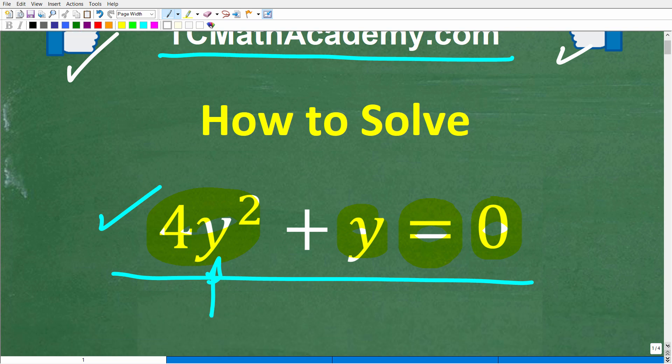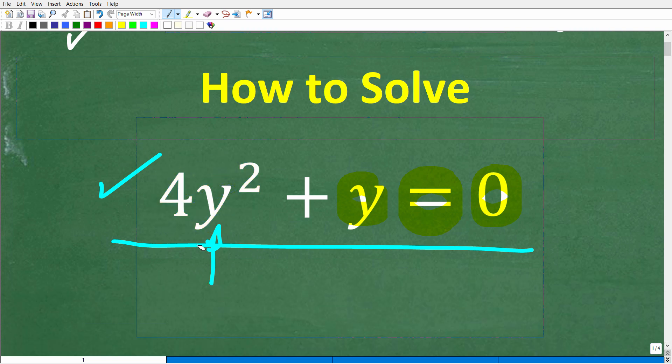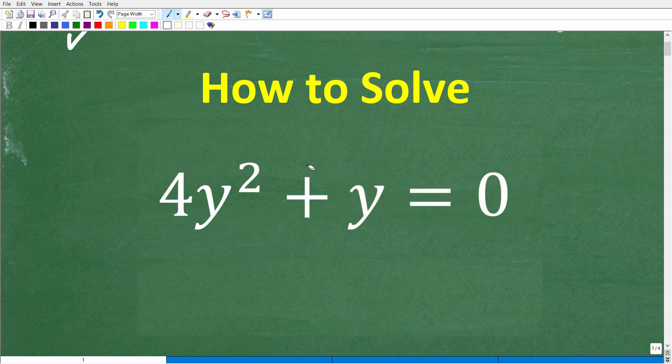Okay, so let's go ahead and get into this problem. So we have 4y squared plus y is equal to zero, and again, we're trying to solve this equation for y. So what is y equal to?